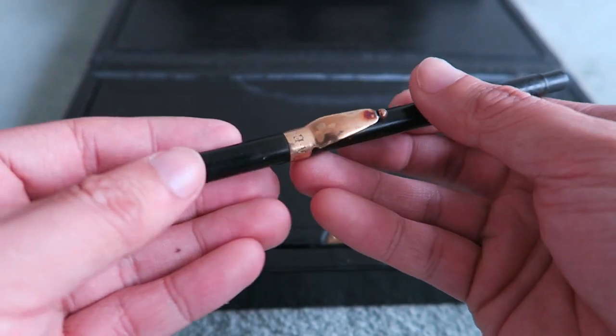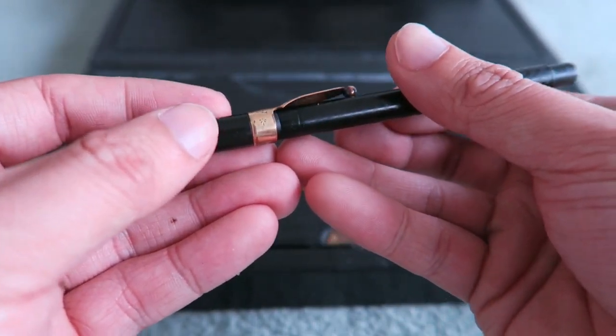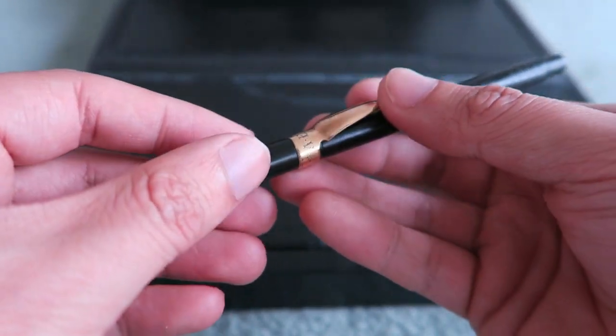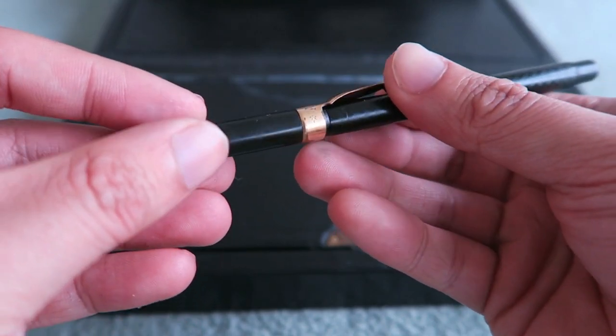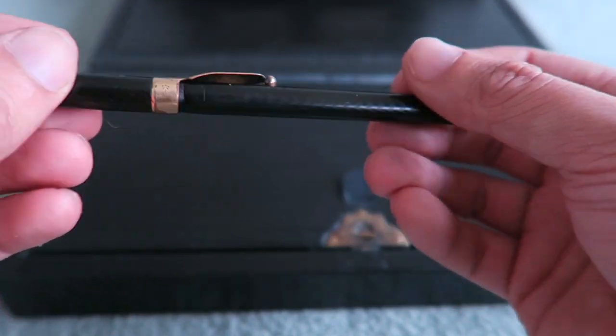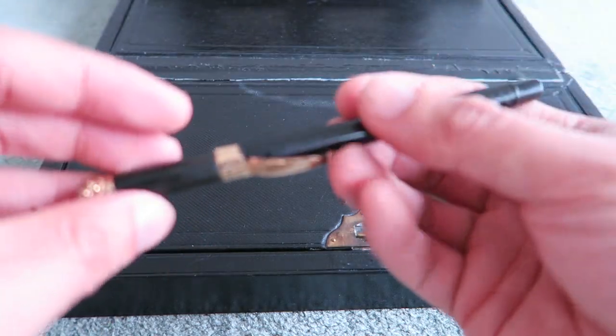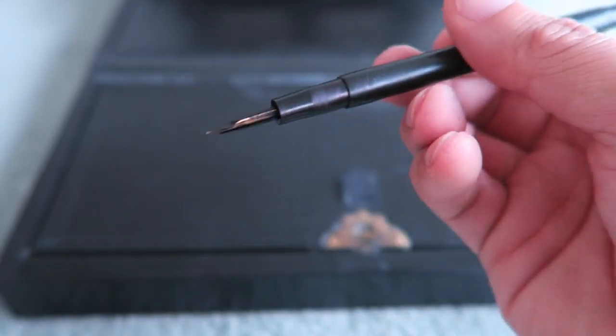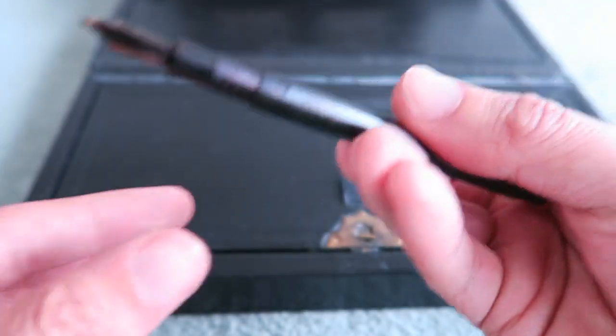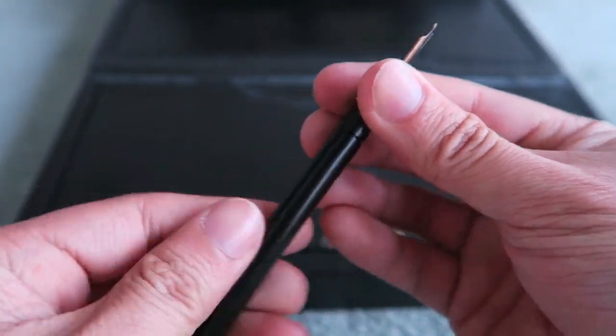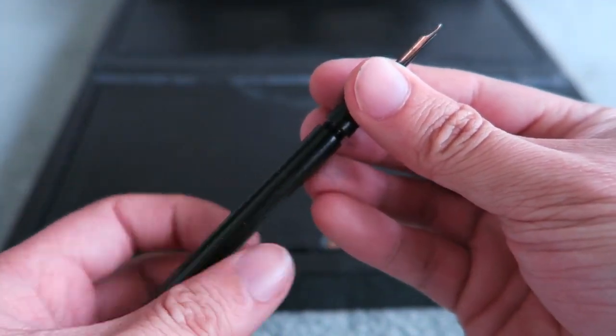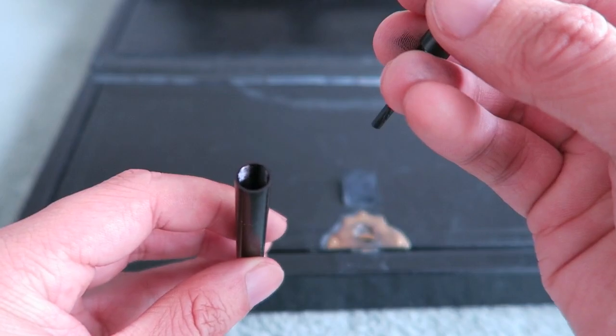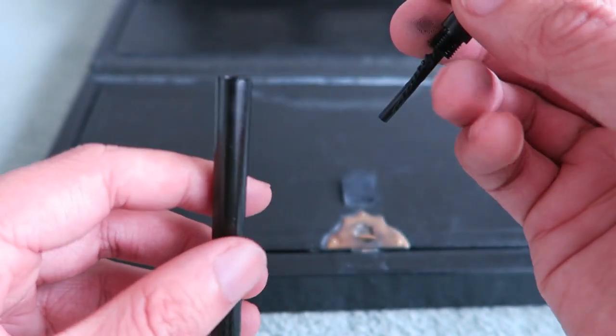So, this is a Swan eyedropper fountain pen from about 1900. 1900, 1895, 1905. Around that 10 year gap. And it's called an eyedropper pen because there is no way of filling the pen using the pen itself. You have to unscrew it here. And in here, you fill it with ink using an eyedropper. That's why they're called eyedropper pens.